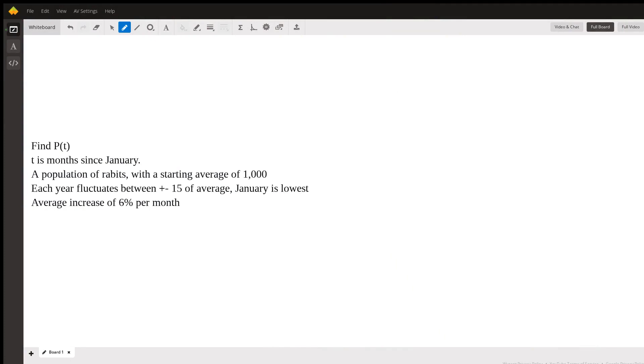In this problem, we're trying to find an equation to model this population of rabbits. The average rabbit starting population is 1,000. That average increases by 6% per month. And throughout the year, the rabbit population fluctuates by 15 above or below that average.